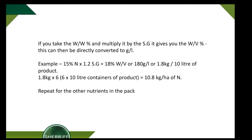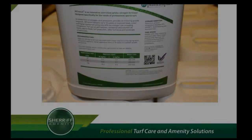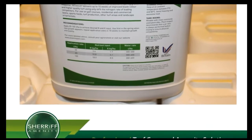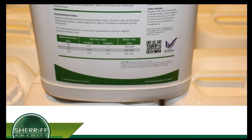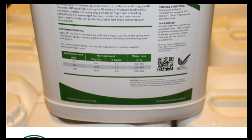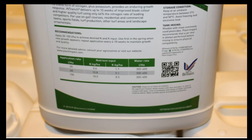Now that we have the weight by volume value, it is again a very simple process of multiplying by the application rate. For example, 1.8 times 6, or 1.8 times 6 ten-liter containers, will equal 10.8 kilograms per hectare of nitrogen, as you can see on the container.